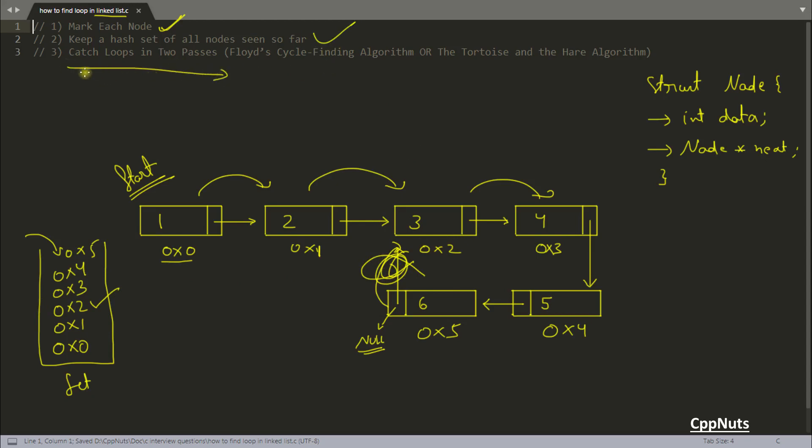Now let's look at the third one. This is very interesting and very famous in the interview questions and they expect this from you. Let's understand this one - catch loops in two phases, also called Floyd's cycle finding algorithm or the tortoise and the hare algorithm. Why tortoise and the hare we'll see that.